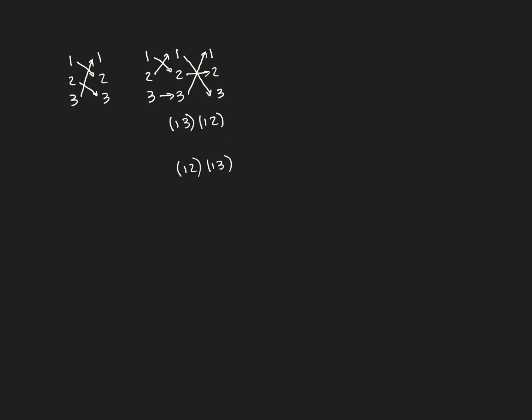This is one of the ways in which breaking an element down into a composition of transpositions is incredibly beautiful, because if you want to invert it, you can just reverse all the transpositions. The inverse of this element is: do (1, 3) first, followed by (1, 2). To invert, you want to send all elements back to where they came from, so you do all the transpositions in reverse order.